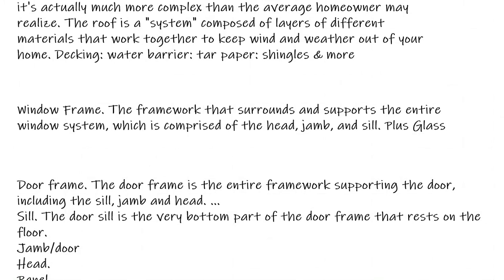The window frame is a portion inside of the frame itself. It is a structure comprised of the head, the jamb, and the sill. The head is the top. The jamb would be the vertical boards that define the edge of the window, and then the sill is the bottom. Plus, obviously, you're going to have some glass in there.